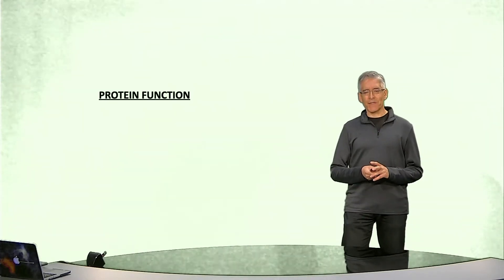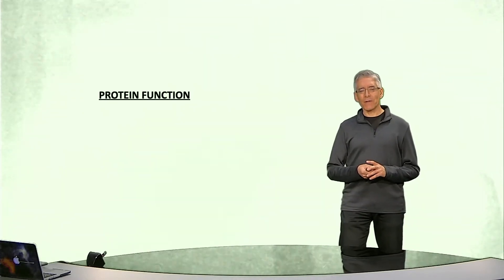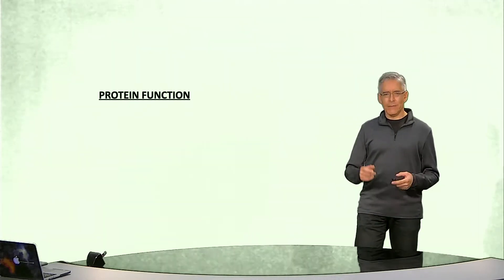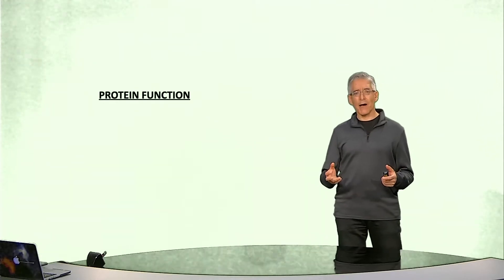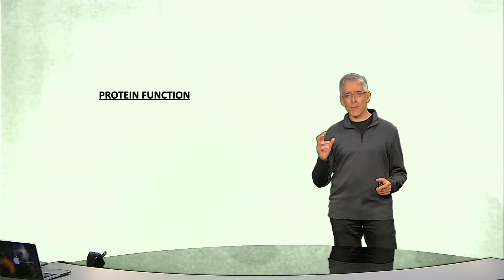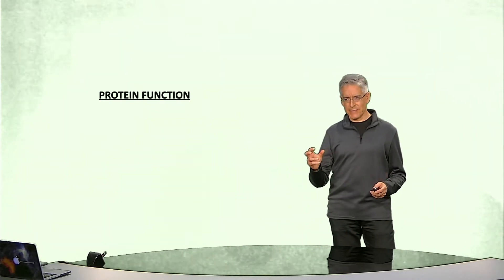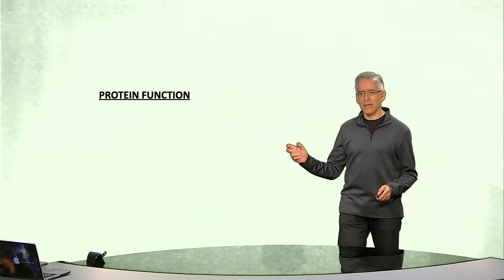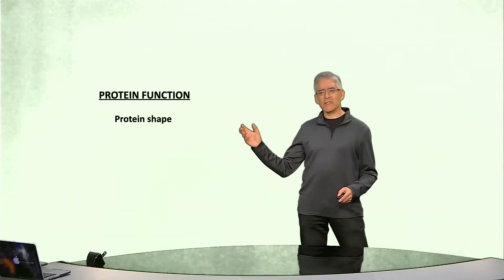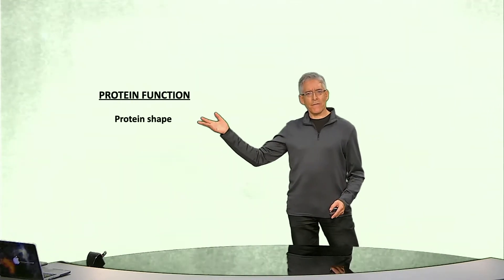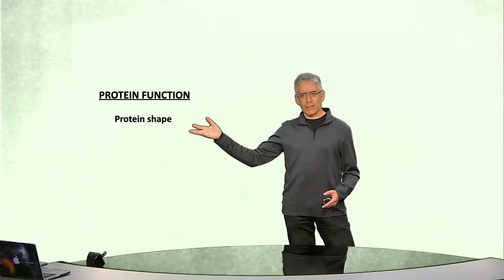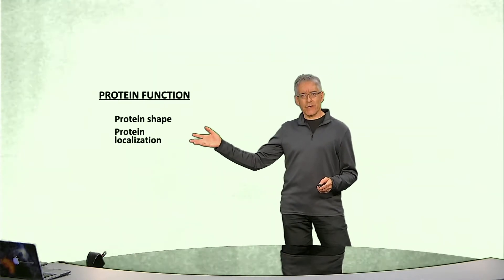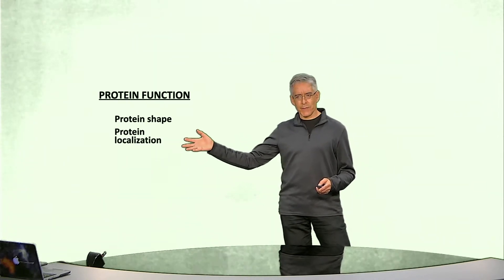Welcome to another episode of the Molecular Cell Biology YouTube channel. In a previous episode, we mentioned how there are two main determinants that dictate the function of a protein within the cell. The first one is the shape of a protein, and the second one is the location of that particular protein.